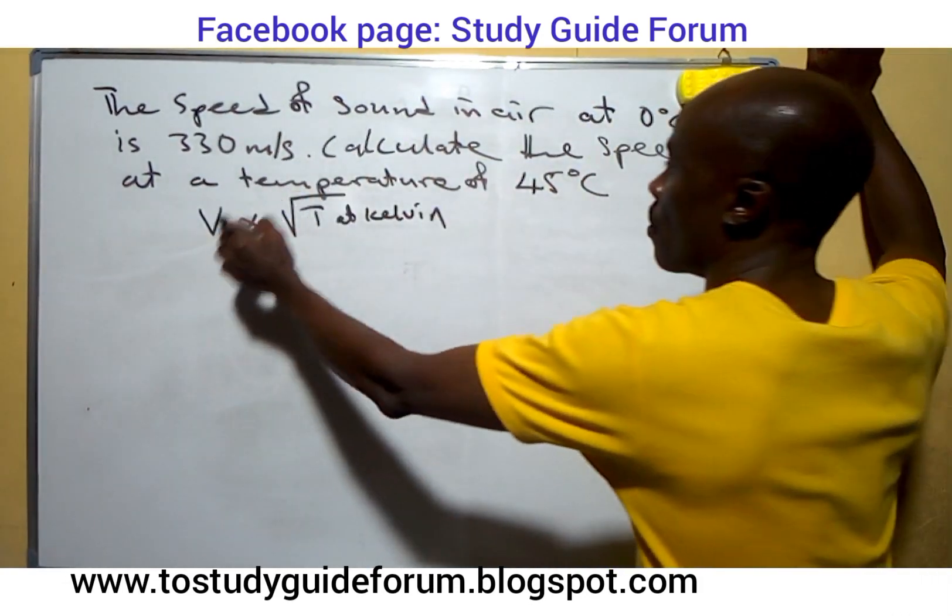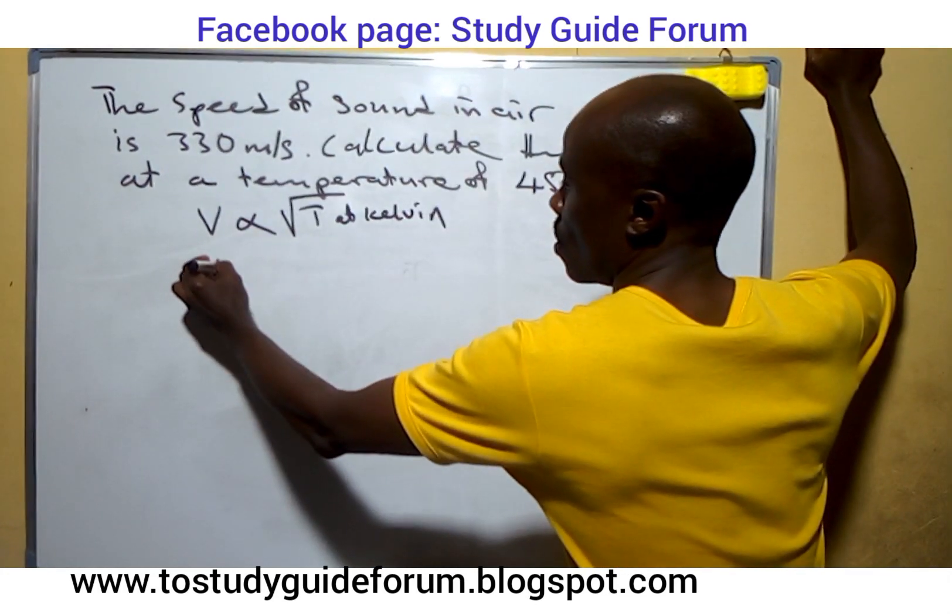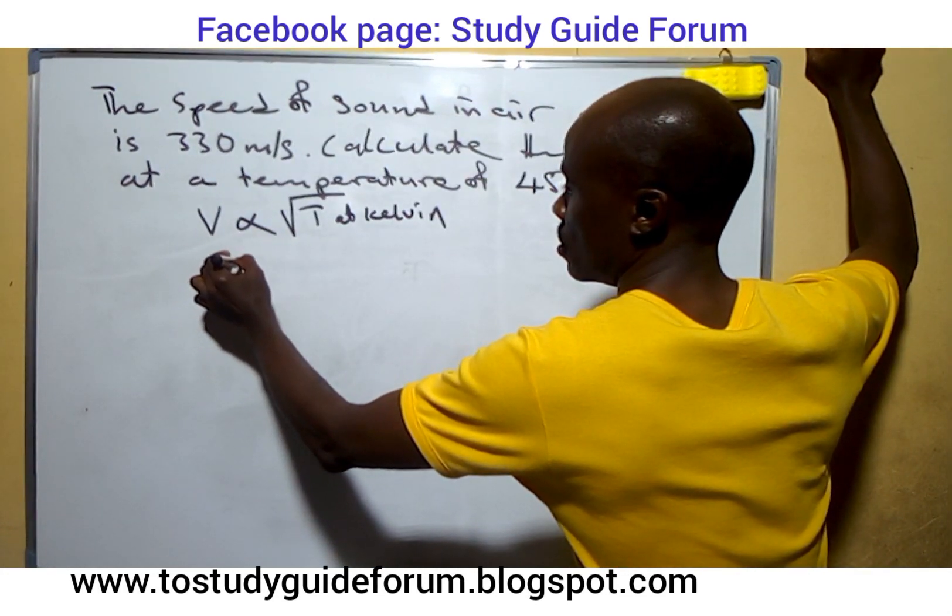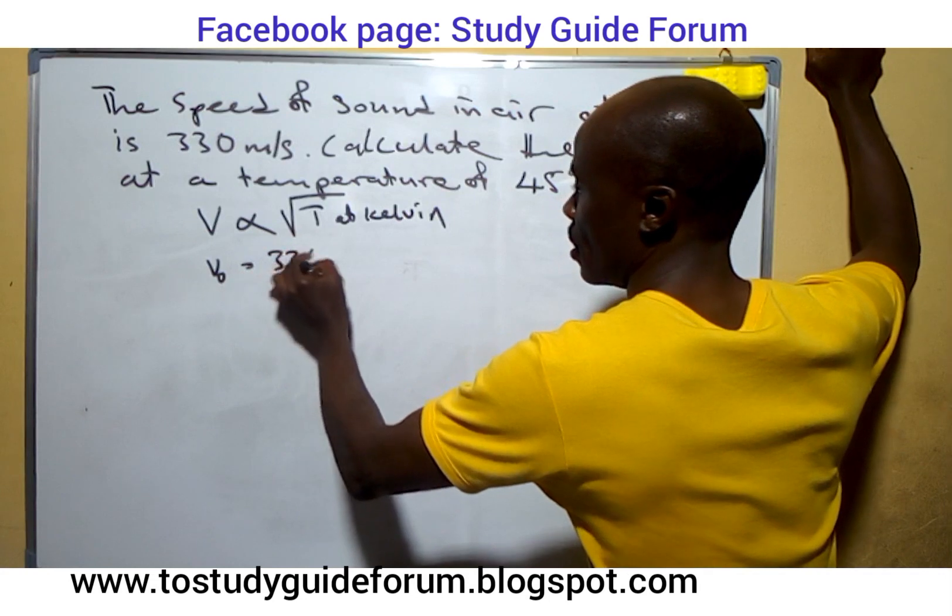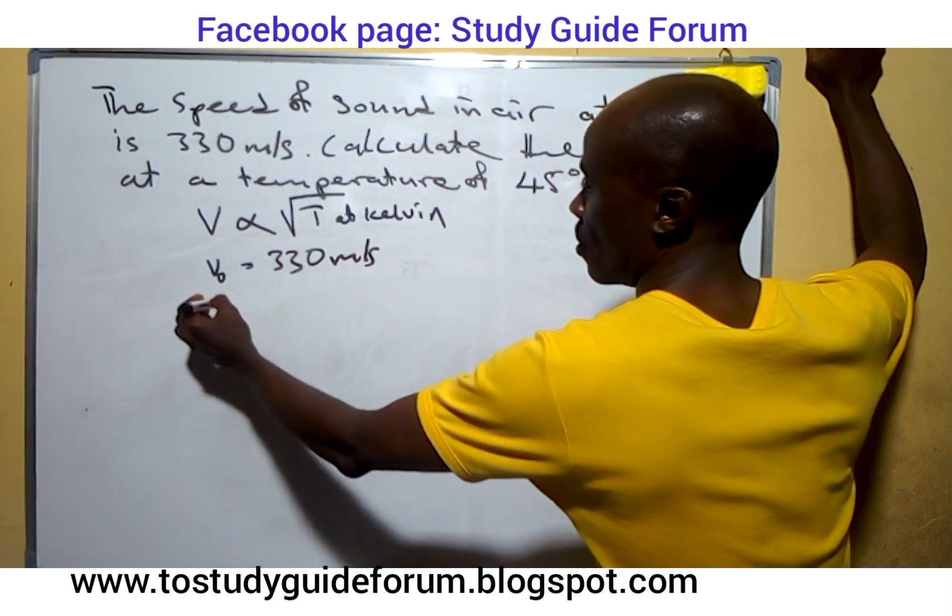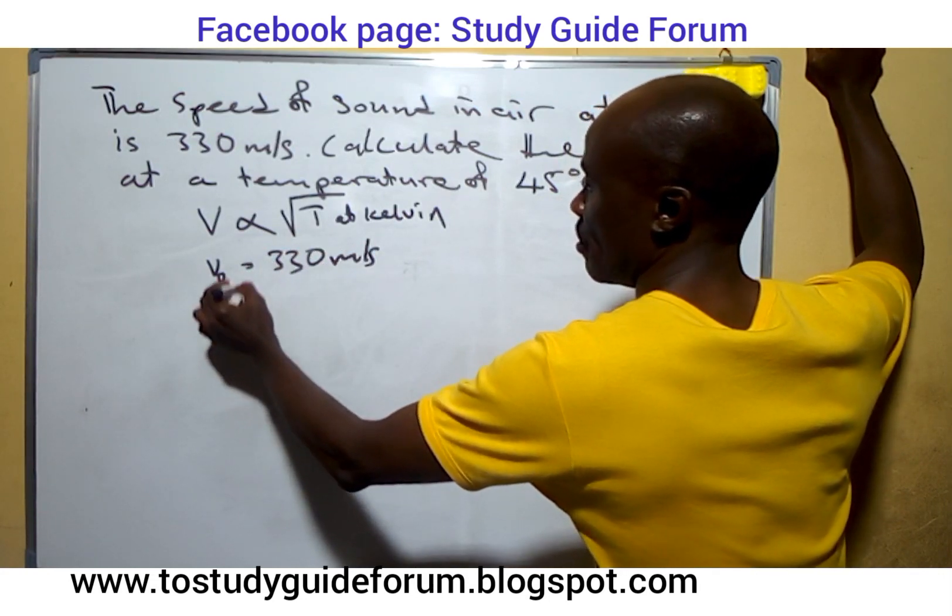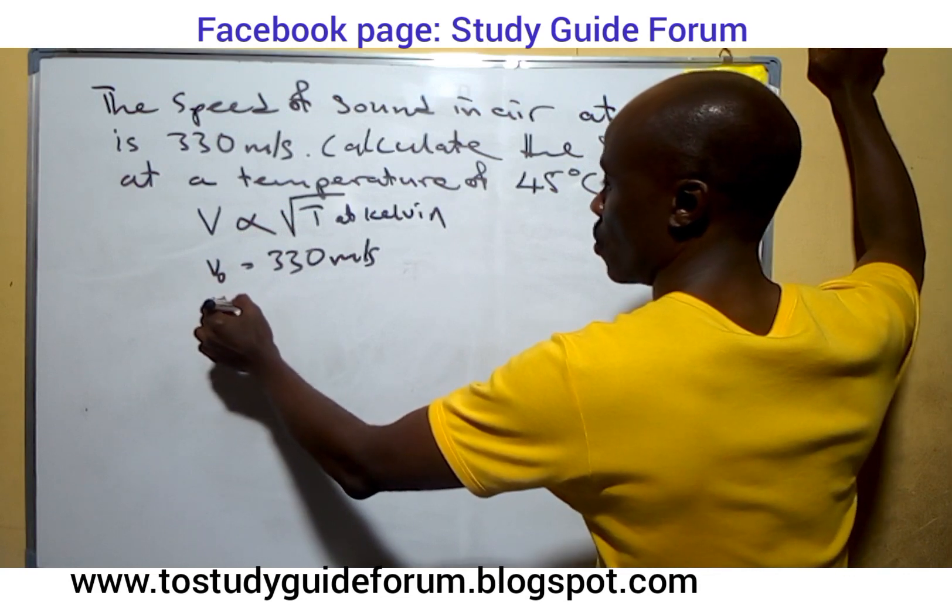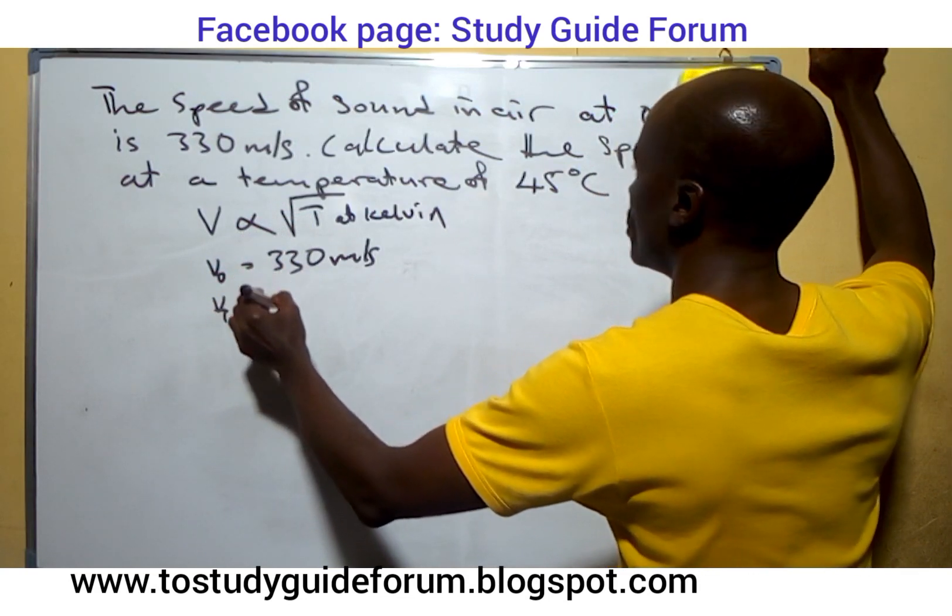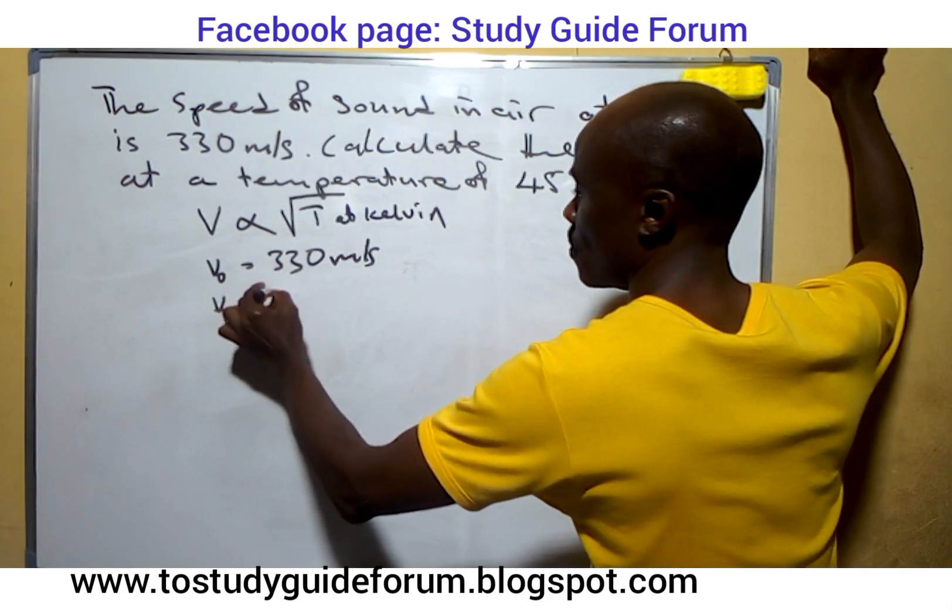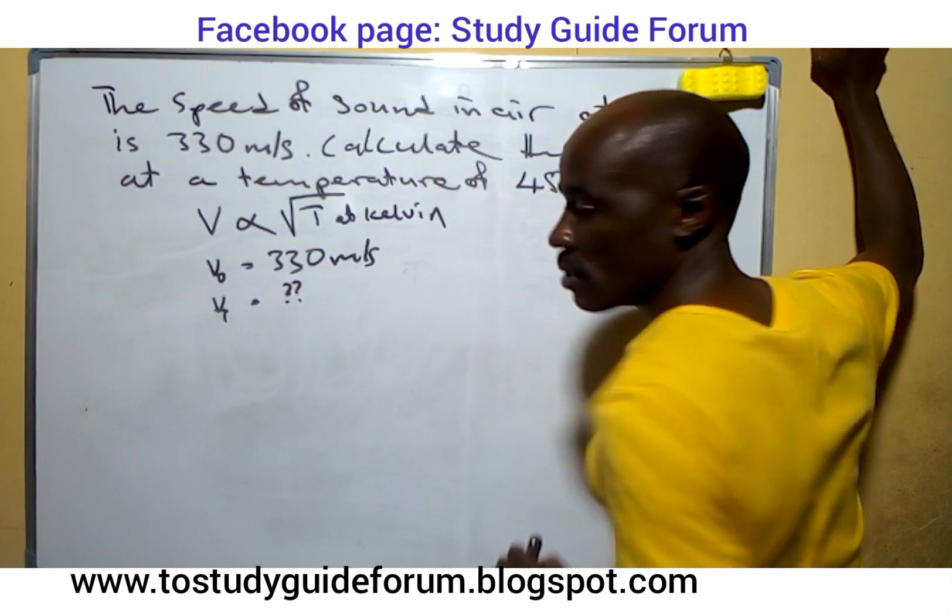In this case, we have that of zero degrees Celsius. Velocity there is 330 meters per second. And velocity at temperature 45 degrees Celsius, we don't really know. That is the one we are looking for.